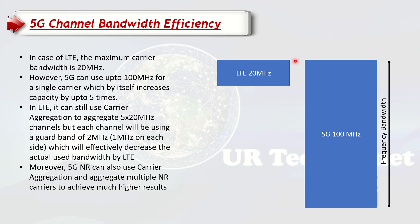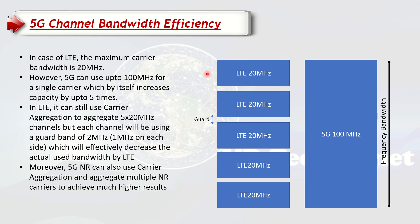Just looking at these two, we can see that 5G has five times more bandwidth, which means five times more capacity. Now, the question might arise: in LTE we can use carrier aggregation — say five LTE carriers of 20 megahertz each — so we can still reach 100 megahertz on LTE. So what makes 5G special in comparison?